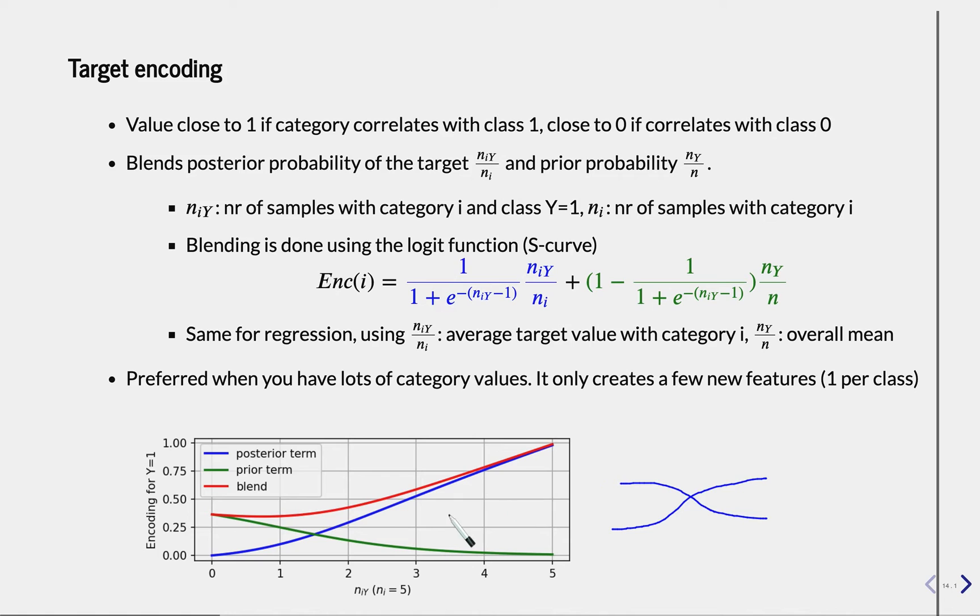So if we then blend that, we get something like this. So the posterior scaled with this S-curve gives you this.